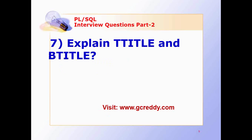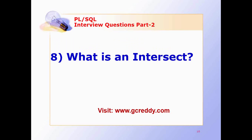Explain TTITLE and BTITLE. TTITLE and BTITLE are commands that control report headers and footers. What is an INTERSECT? INTERSECT is the product of two tables and it lists only matching rows.